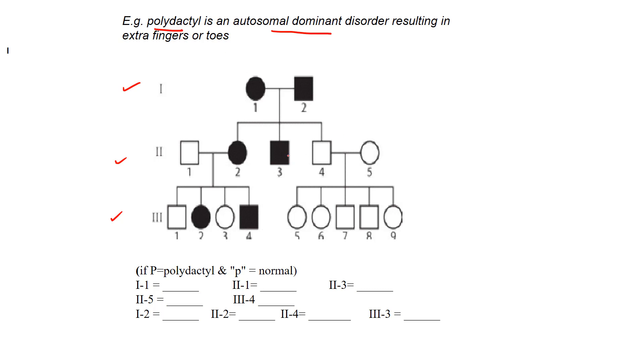Every single generation somebody is affected by this disorder called polydactyl, which makes it autosomal. Heterozygous parents—how do we determine if somebody's heterozygous? Some kids with it, some kids without it. That means these individuals are heterozygous, and when they're heterozygous and have the disorder, that's dominant. Previous ones we looked at, if you were heterozygous and didn't have the disorder, made you recessive.